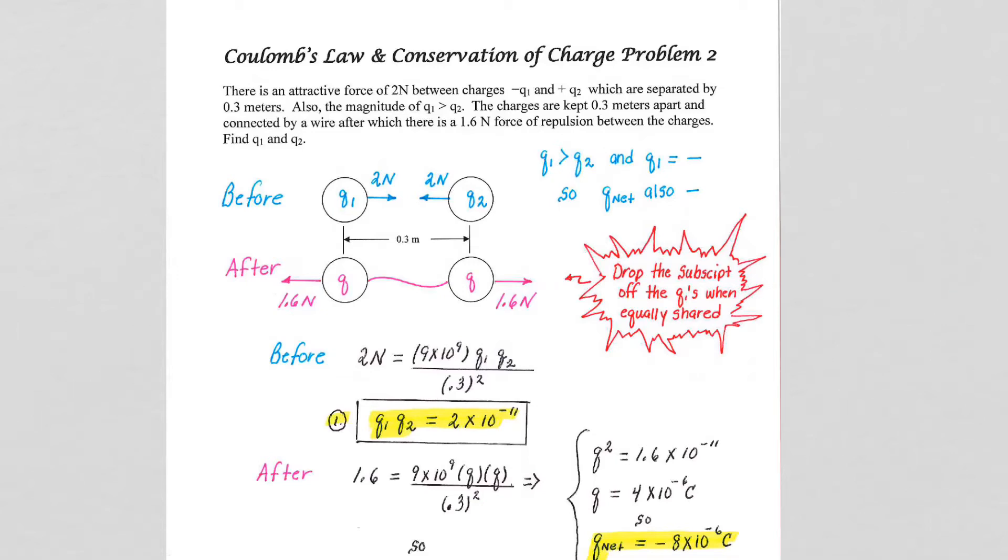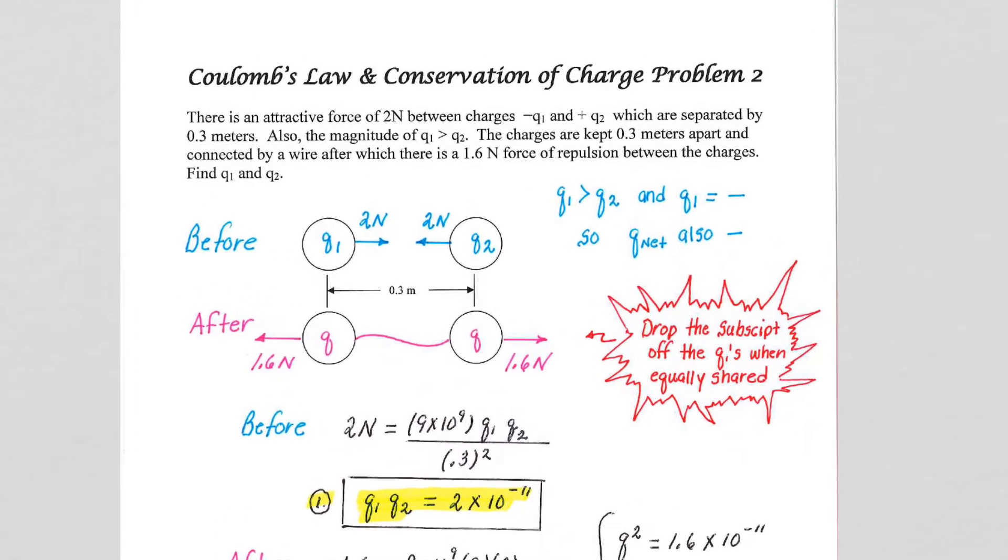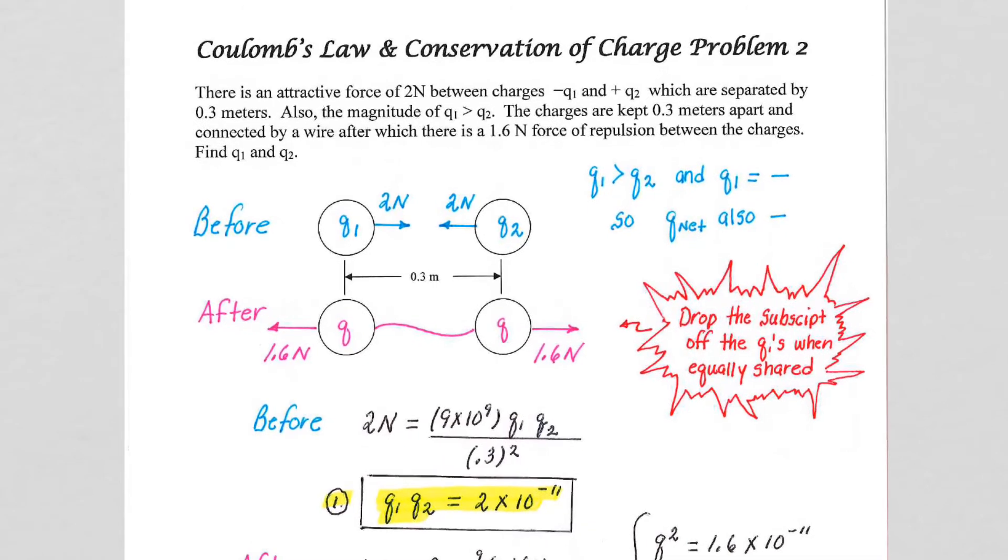In our second example problem using Coulomb's Law and conservation of charge to problem-solve, we have a little more complicated situation in that the information we're given initially isn't enough to directly solve the problem.